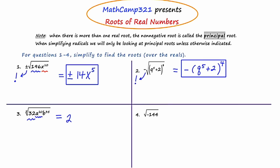What monomial times itself five times is going to give us a to the twentieth? That's going to be a to the fourth. A to the fourth times A to the fourth times A to the fourth times A to the fourth times A to the fourth. Remember, if you're multiplying powers of the same base, you retain the base and add the exponents. Four plus four is eight, plus four is twelve, plus four is sixteen, plus four is twenty. The fifth root of A to the twentieth is A to the fourth.